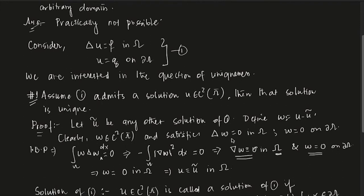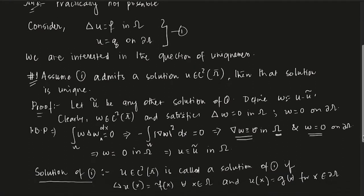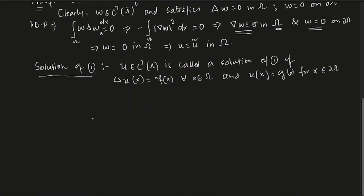We have also proved that the Laplace equation has a unique solution. So if you have a Poisson equation — Laplacian of u equals f in omega with u equals g on the boundary — and if there is a solution, that solution is unique. Uniqueness is out of the way. The question now is whether we can find such a solution, and this is where it gets more complicated. Let me give you a characterization of solutions.